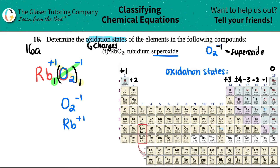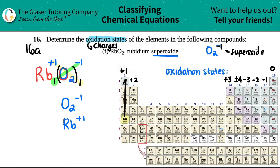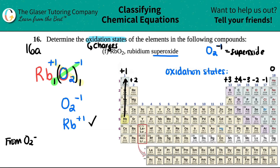Now let's check the trends. For each Rb I have a plus one — and rubidium is in the group with a plus one trend, so this checks out. However, O₂ is not on the periodic table by itself; they just have oxygen. But O₂ is a polyatomic, so from O₂ minus one we need to find the oxidation state of just oxygen.